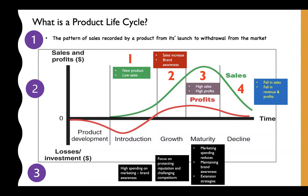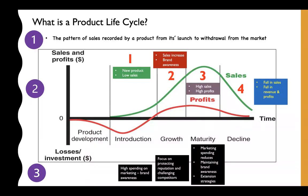In stage three, marketing expenses may reduce simply because sales are high and the product is already well known. The business will still spend on marketing to maintain brand awareness. At this point they may also start looking at extension strategies — thinking of how to innovate their product, whether through a new special limited edition design, in order to encourage more sales and keep the product longer in the market.